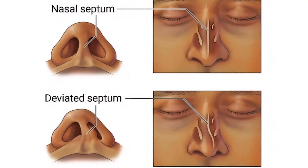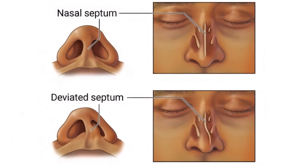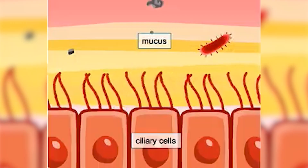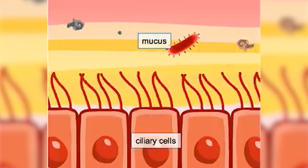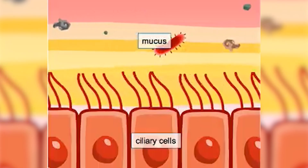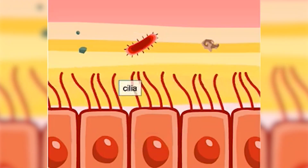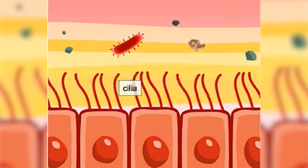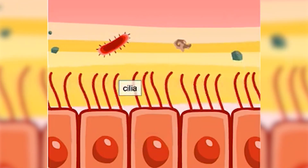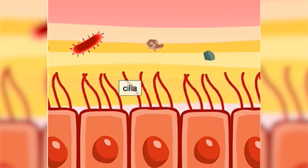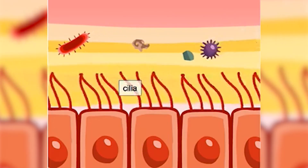The nasal septum also supports the structure of the nose and helps maintain its shape. It is lined with mucus membrane that contains tiny hair-like structures called cilia, which help move mucus and trapped particles toward the throat, where they can be swallowed or expelled.